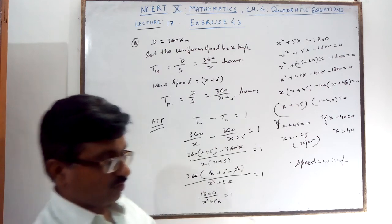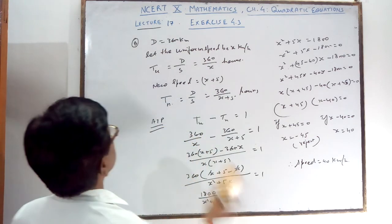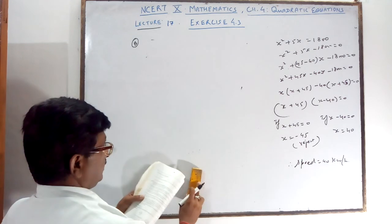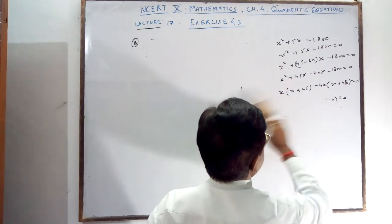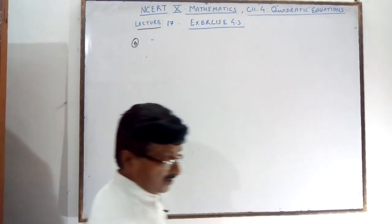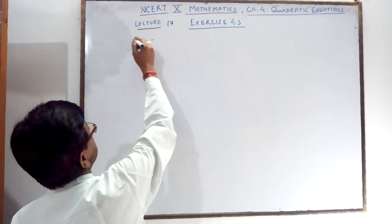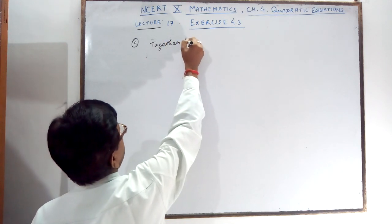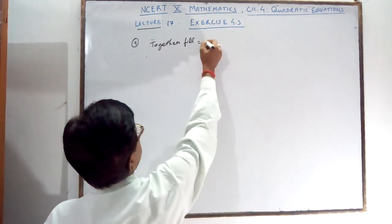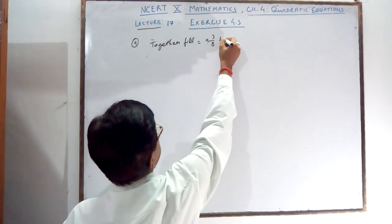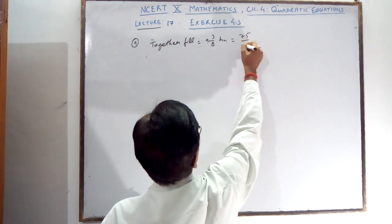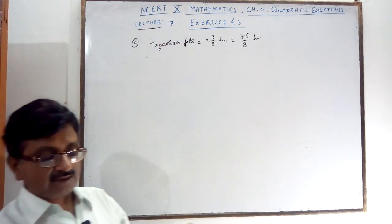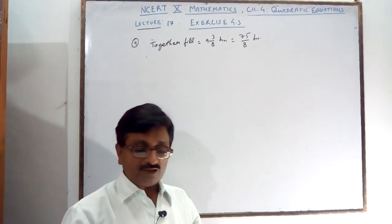Now question number 9: two water taps together can fill a tank in 9 whole 3 by 8 hours, which is 75 by 8 hours. The tap of larger diameter takes 10 hours less than the smaller one to fill the tank.